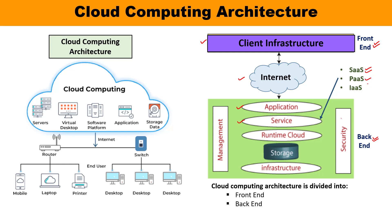Second is Platform as a Service, which is a complete development and deployment environment in the cloud with resources that enable you to deliver everything from simple cloud-based applications to sophisticated cloud-enabled enterprise applications. PaaS and IaaS are owned and managed by the cloud providers. PaaS means the complete services as a package. Examples include Azure App Services, AWS Elastic Beanstalk, and Google App Engine.